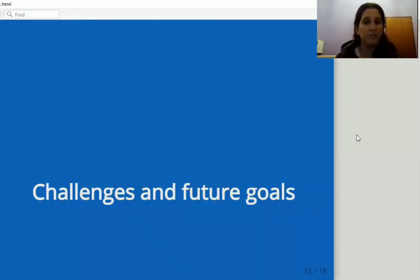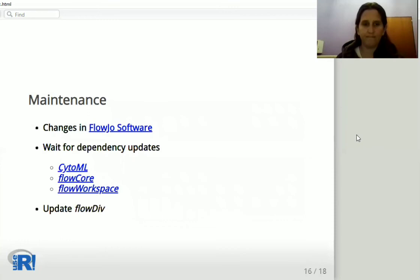The challenges and future goals. Each time FlowDiv implements a change, we need to wait for dependency updates, mainly these three Bioconductor packages, and then update FlowDiv accordingly.